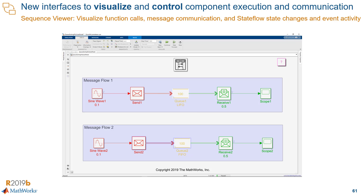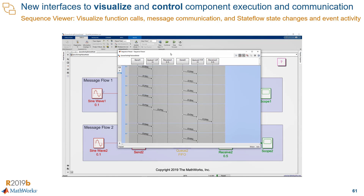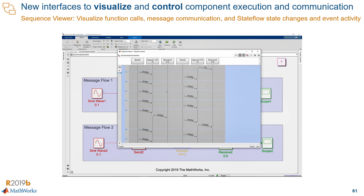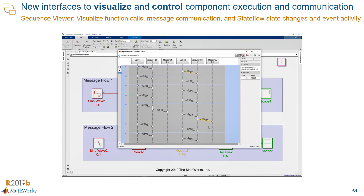There is also a Sequence Viewer block to help you visualize the messages and events in your models. In the y-axis, the Sequence Viewer shows you time, and in the x-axis, you see the sequence of events that are happening in the model. You can also see the data that is transmitted through each one of these events.